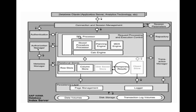The port number for connecting to the Index Server is a five-digit number — useful when making connections with reporting tools or third-party tools. The Index Server port number starts with 3 and ends with 15, with the instance number in between. So if your instance number is 00, your Index Server port number will be 30015.